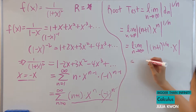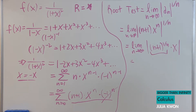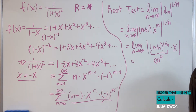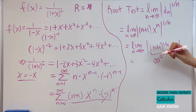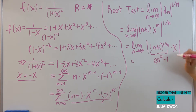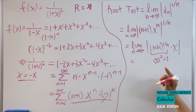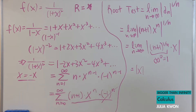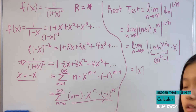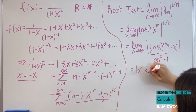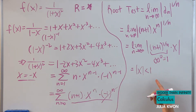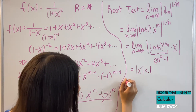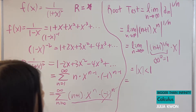If we take this limit, then for the n plus 1 to the power of 1 over n part, as n approaches infinity we get infinity to the power of 0, which equals 1. So the limit gives us 1 times the absolute value of x. For convergence in the root test, we need this to be less than 1. So we set the absolute value of x less than 1, which tells us the radius of convergence is equal to 1.